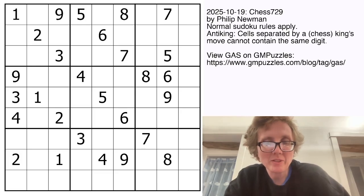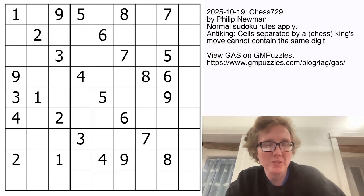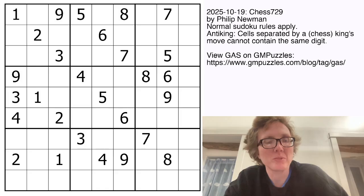Good morning, my friends. I'm Clover, and this is Genuinely Approachable Sudoku, and today we are solving Chess 729 by Philip Newman.